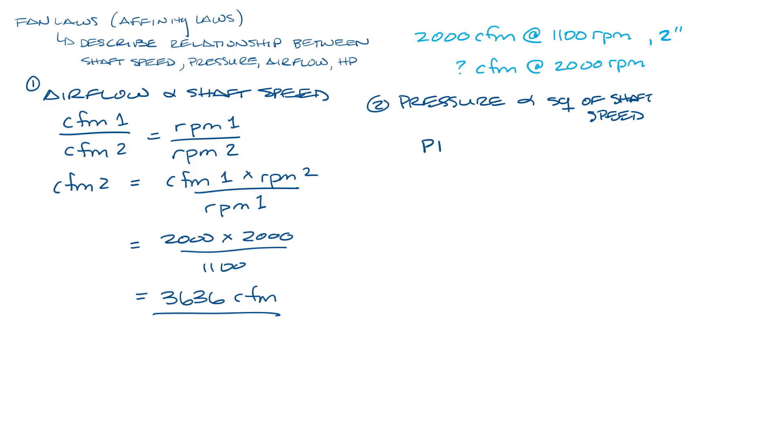So pressure 1 divided by pressure 2 equals RPM1 squared divided by RPM2 squared. So to find the pressure at 2000 RPM, we get the equation pressure 2 equals pressure 1 times RPM2 squared divided by RPM1 squared. And then that comes out to about 6.6 inches.